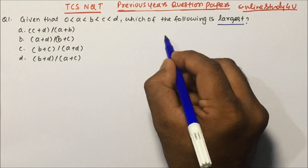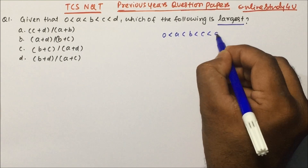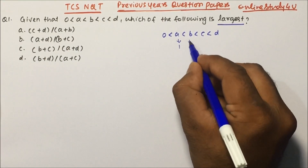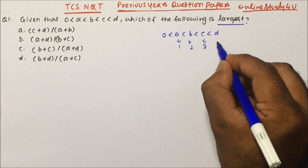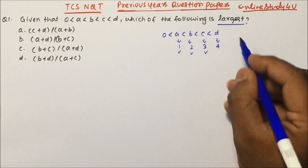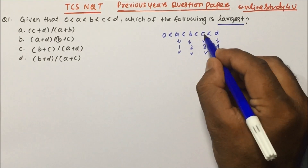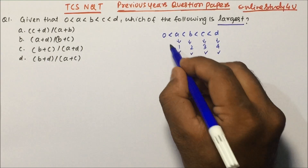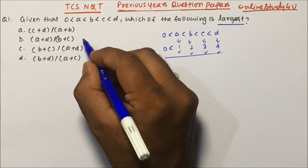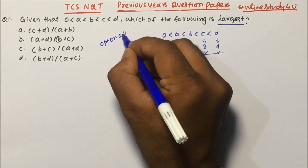What we can do is assume values for A, B, C, and D. If you assume simple values, the calculation will be easy. So I have assumed A = 1, B = 2, C = 3, and D = 4. The reason is D is greater than C, C is greater than B, B is greater than A, and A is greater than 0. Now put these values into the options and get the answer — this is also called the option attack method.